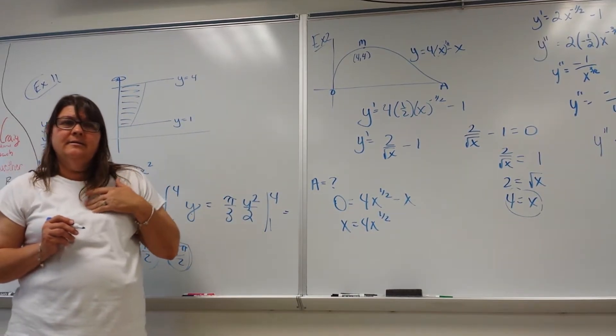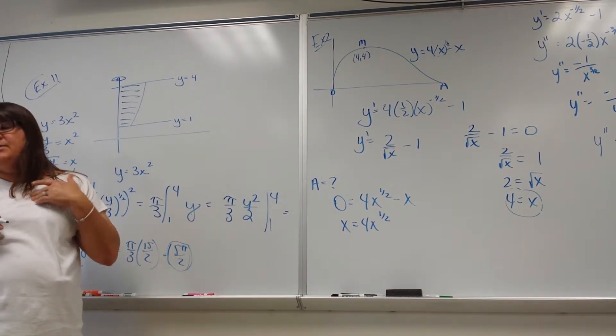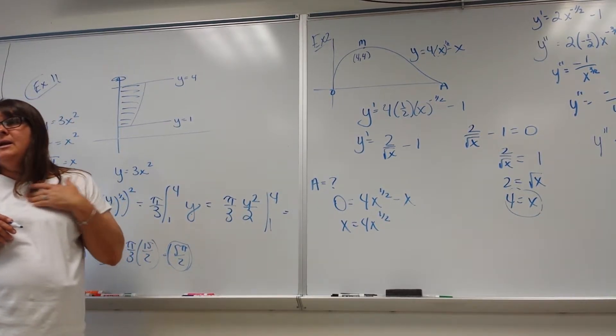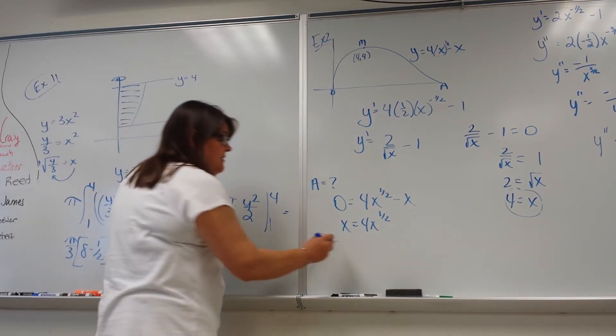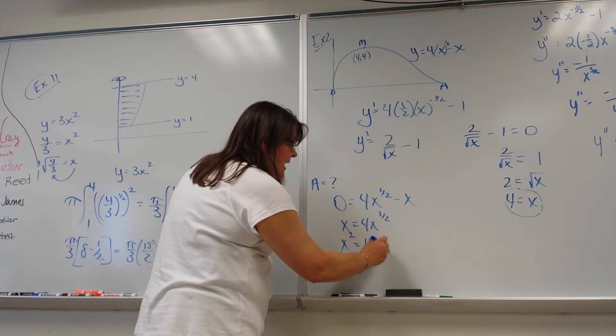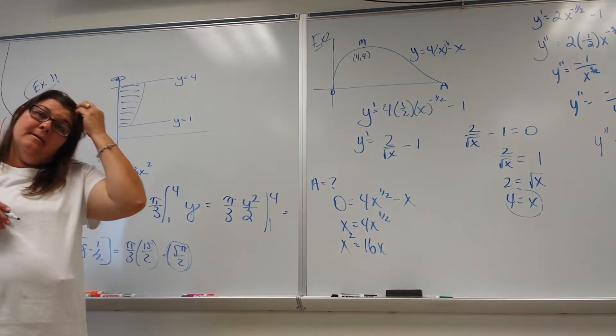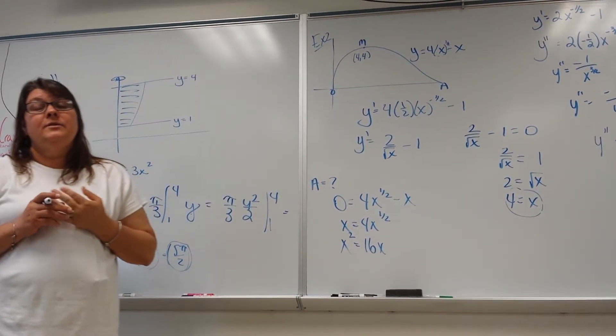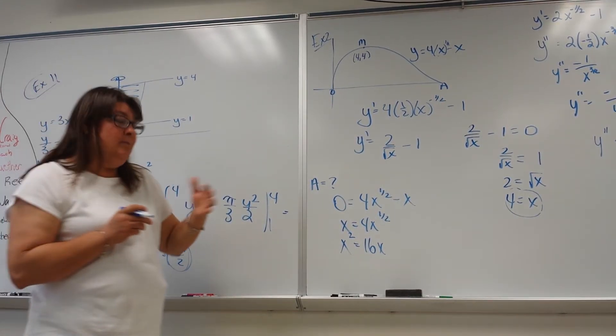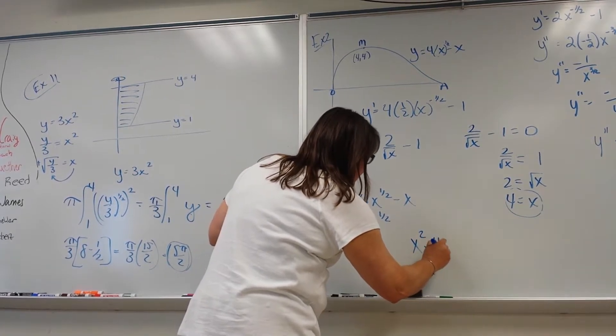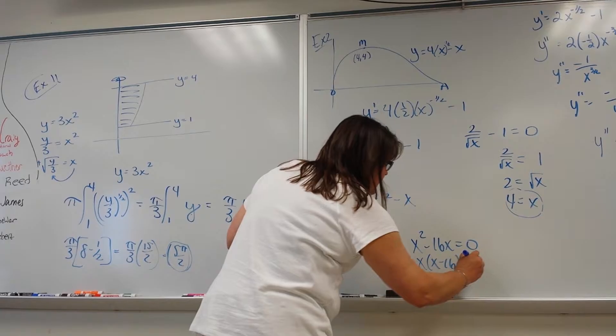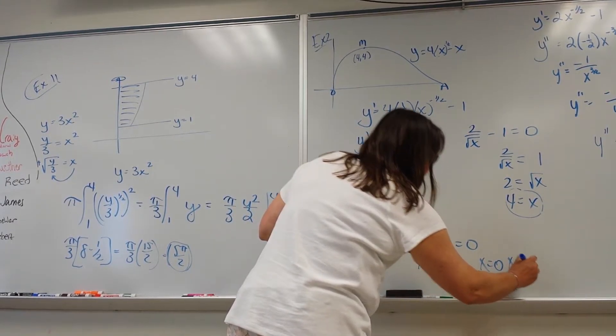So how do I find a? Well, so the way I find a is I think everybody gets that y is zero, right? Because it's the x intercept. So I'm going to add the x over. So I would have x equals 4x to the 1 half. So far, so good? What would I do to both sides? Square both sides. If I square both sides, what do I get rid of? The 1 half. So if I square this, I've got x squared. If I square this, I've got 16x. You can't divide by x because you're eliminating one of the answers. If you divide by x, you're eliminating the answer. So then you bring it all to one side. Factor out x.